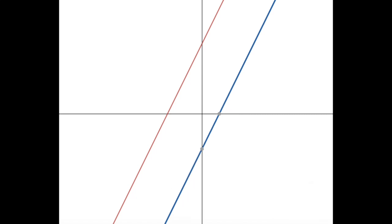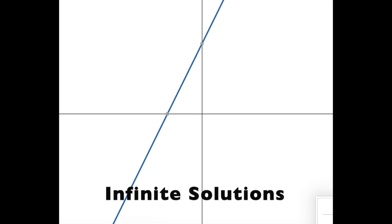And if you decided to move the lines, eventually you could get it to the point where they would overlap on top of one another. And if they overlap on top of one another, they're the exact same line. You have infinitely many places where they're intersecting if they're right on top of each other. And if that's the case, then you have infinitely many solutions.